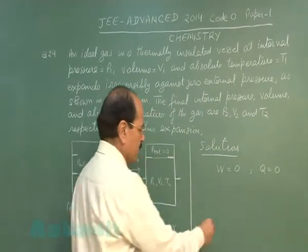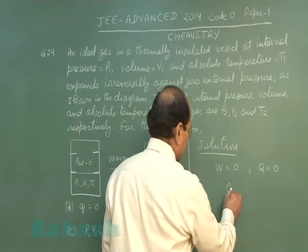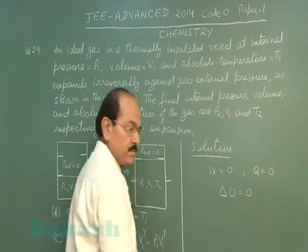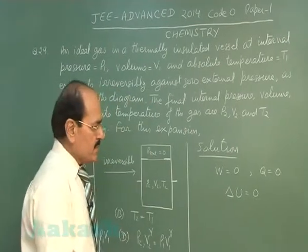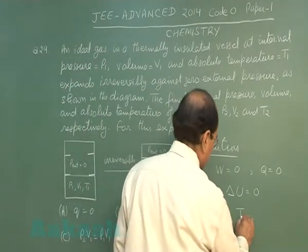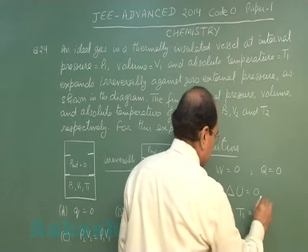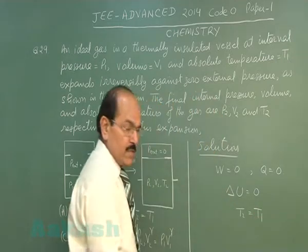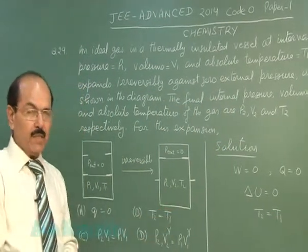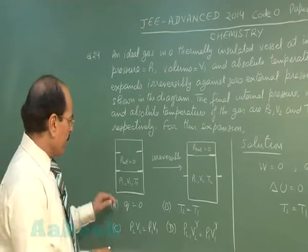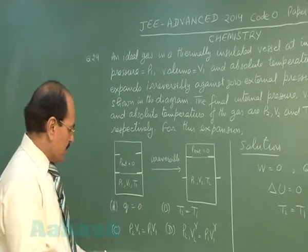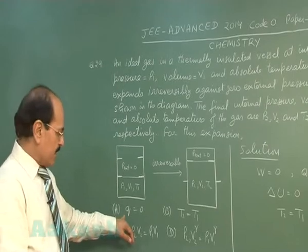When Q is zero, delta U is also zero. Since delta U is zero, it means there is no change of temperature. The initial temperature and final temperature are the same. So out of the 4 options given, option A is correct.